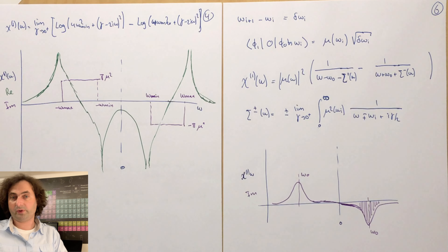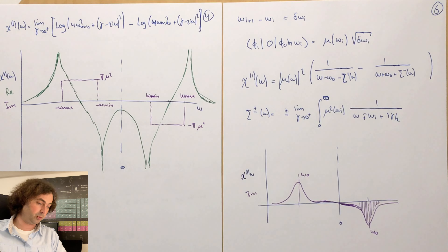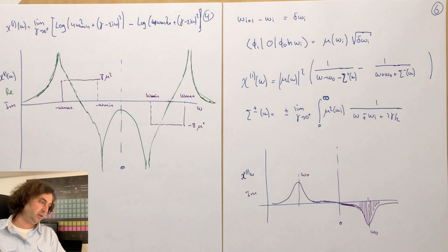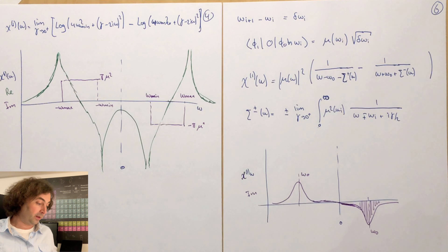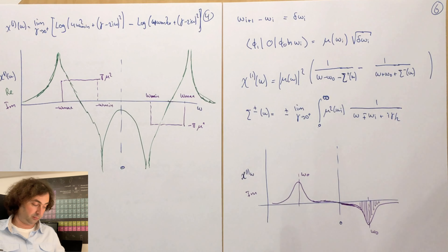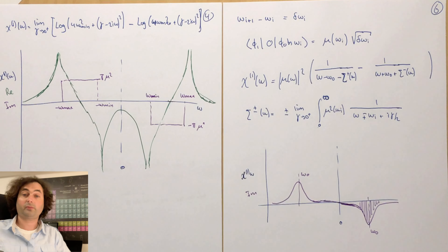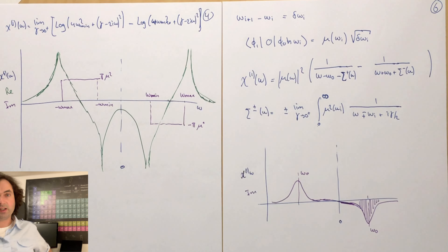So with that I hope to have shown you how to include dissipation in real quantum systems. You get back to a form very similar to the classical case — even your self-energy has both a real and an imaginary part, giving rise to a shift of the resonance frequency, which you also find in the classical case. Thank you very much for your attention; stay healthy — we'll see each other later.